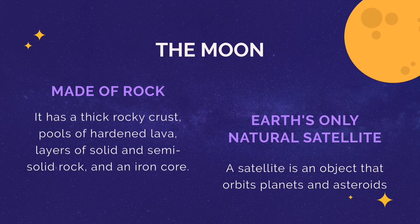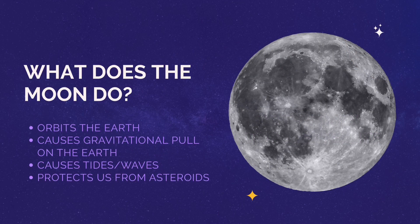One of the main things that the moon does is orbit the earth. Orbit is the path an object takes in space to go around another object, so the moon goes around us. Because it orbits the earth, it also causes a gravitational pull on us. This gravitational pull causes tides or waves in the ocean — when you see the waves pull up and get higher and go down, that's all caused by the moon. One last cool thing the moon does is protect the earth from asteroids — when asteroids come flying close to the earth, the moon actually blocks most of them, protecting us.